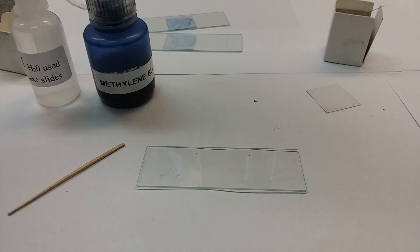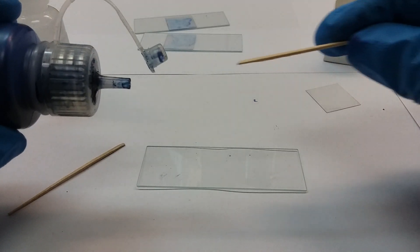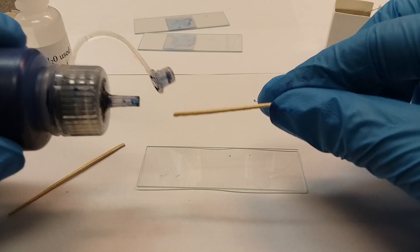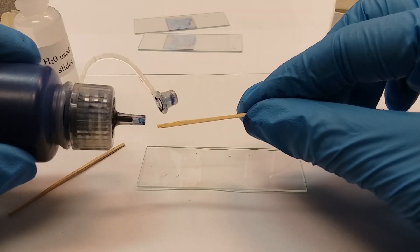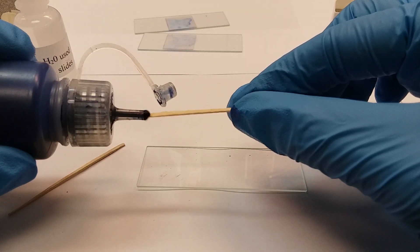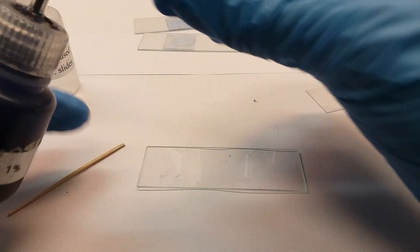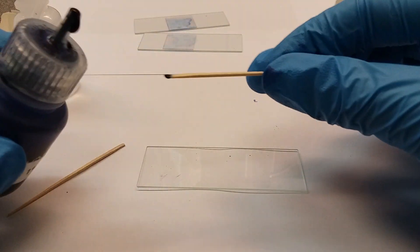There are two methods: you can either start using the water or the methylene blue. I use the methylene blue first. Instead of getting a whole droplet, because this stuff goes really fast and really far, I'm going to get a little bit. I'm not getting a full droplet because that's just way too much solution. I've got a good bit on here.